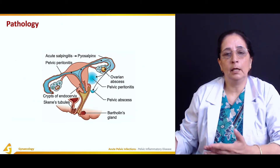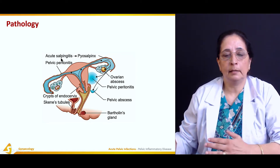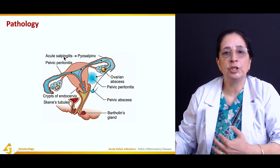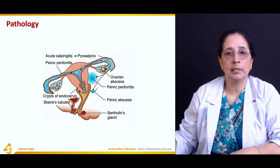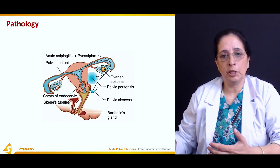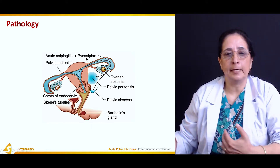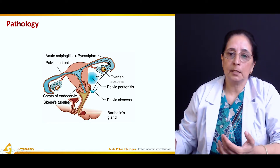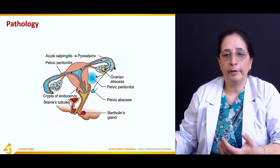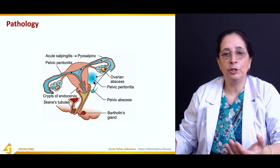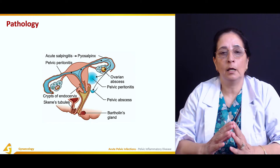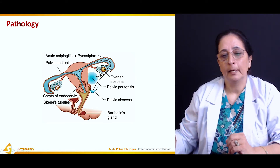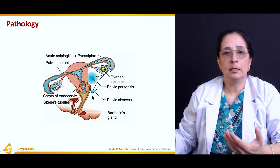Regarding the pathology of pelvic inflammatory disease: if infection starts in the tubes, it is known as salpingitis — acute salpingitis is inflammation of the fallopian tube. Salpingitis can lead to piosalpingitis, which is pus formation in the fallopian tube. That pus or infection can then spread to the ovaries causing ovarian abscess, then to the peritoneum — the covering of all abdominal organs — causing peritonitis, and then pelvic abscess.